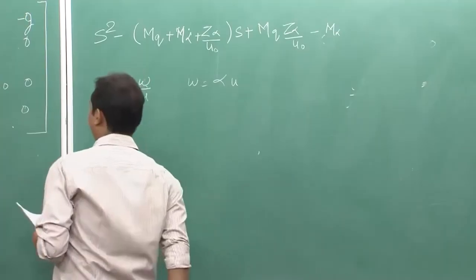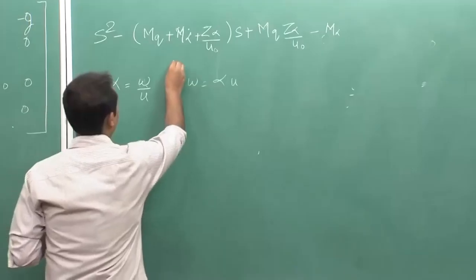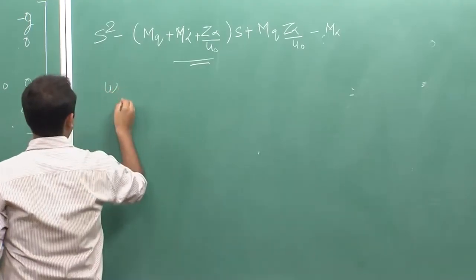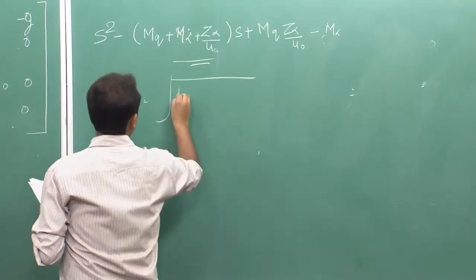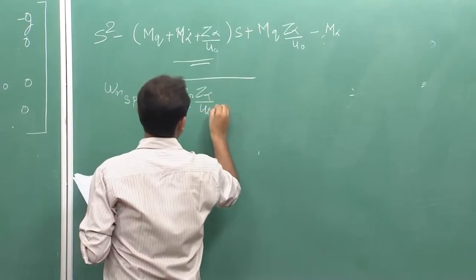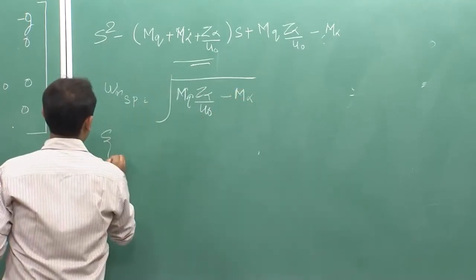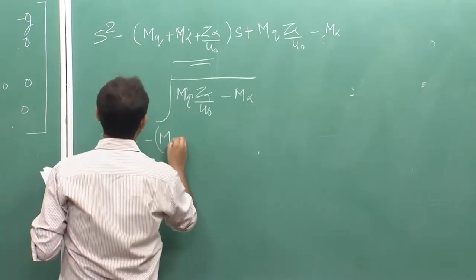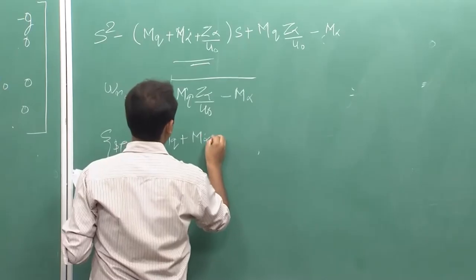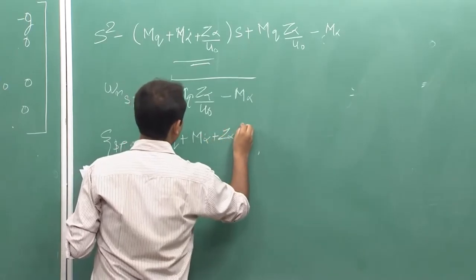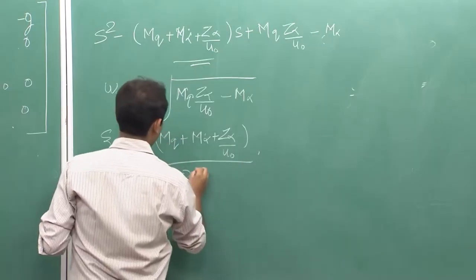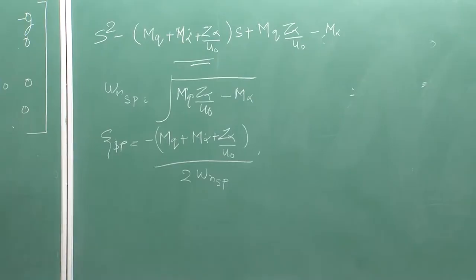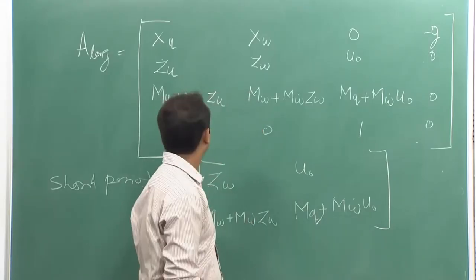You can replace w by alpha times u, and when making this substitution in our equation, you will arrive at this characteristic equation. From this, the natural frequency for short period mode will be the square root of (m_q·z_alpha/u_naught minus m_alpha). These are the formulas we will be using in the numerical which I am going to work out now.